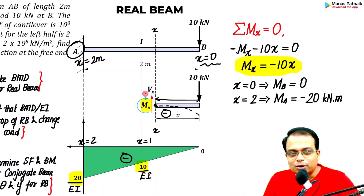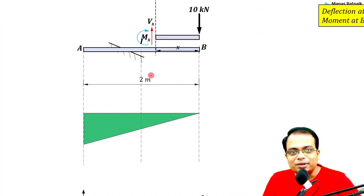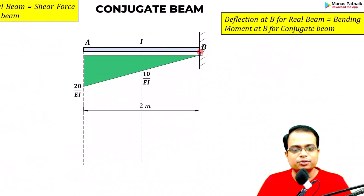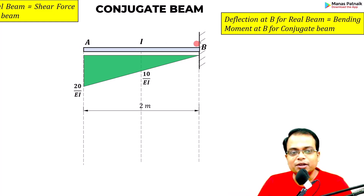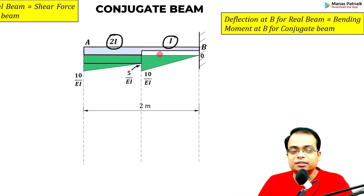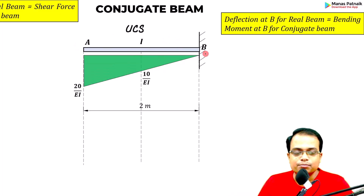Now superimpose the M/EI diagram on the beam — the fixed end is converted to a free end and the free end to a fixed end. However, this is correct only for a uniform cross section. Since our beam has a varying cross section — the right half has I and the left half has 2I — the right half portion stays unaffected.